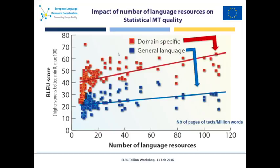Just to repeat the main message in graphical form: the generic dependence of machine translation quality on the volume of data that you have. On the horizontal axis, it's the number of words or segments provided for training of machine translation. On the vertical axis, it's a measurement of MT quality using a so-called BLEU score — an automated measurement of how good MT quality is. You can see that for domain-specific translation, if you have domain-specific data, you can get significantly better machine translation quality.